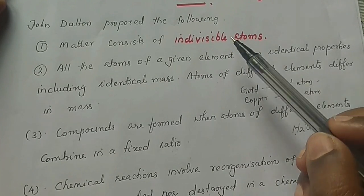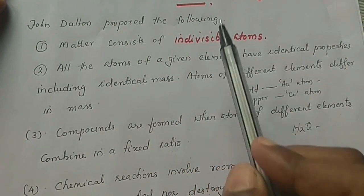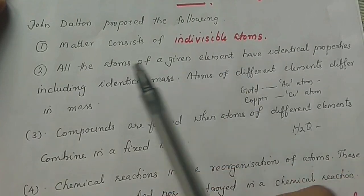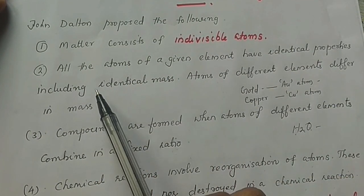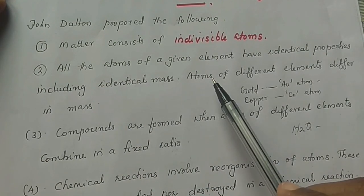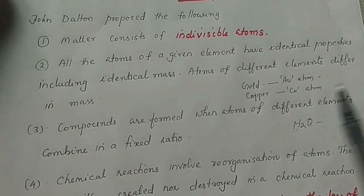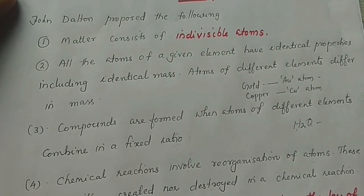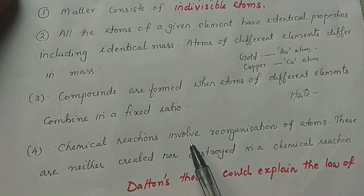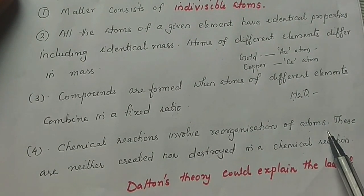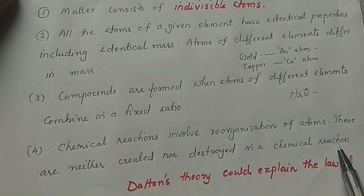To summarize: matter consists of indivisible atoms; all atoms of a given element have identical properties including identical mass, but atoms of different elements have different mass; atoms of different elements combine in a fixed ratio; and chemical reactions involve reorganization of atoms that are neither created nor destroyed.